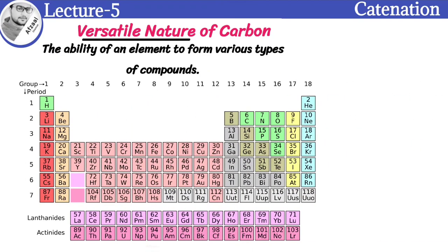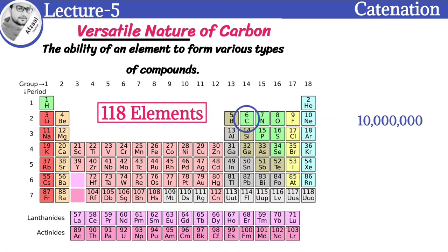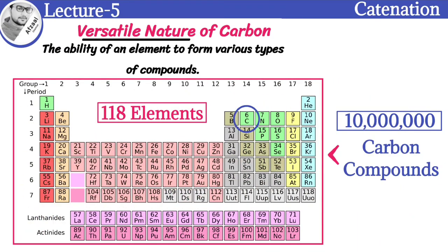There are a total of 118 elements known today. The number of carbon compounds is more than 10 million. This number of various carbon compounds is far more than the number of compounds of all the remaining elements taken together.